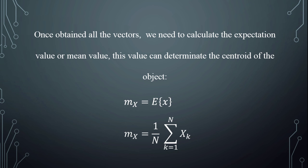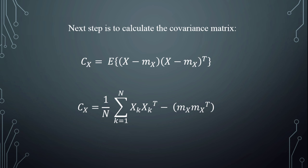The next step is to calculate the covariance matrix: Cx equals the expectation value of (x minus mx) times (x minus mx) transpose. Or equivalently, Cx equals 1 over n times the sum of xk times xk transpose from k equal to 1 to n, minus mx times mx transpose.